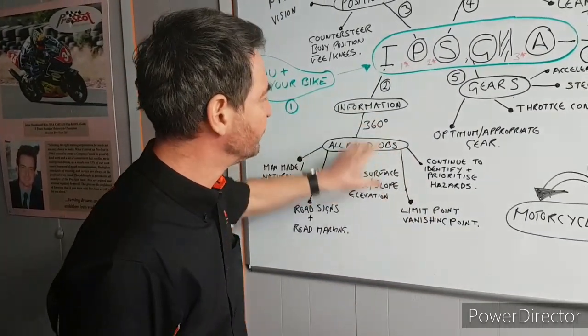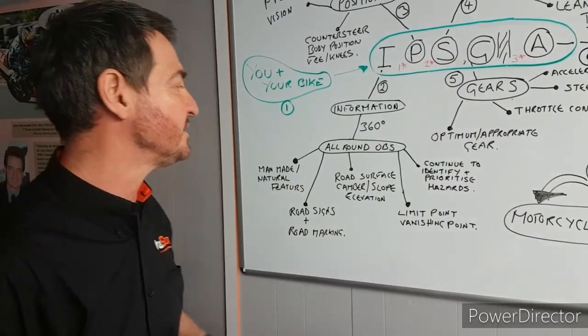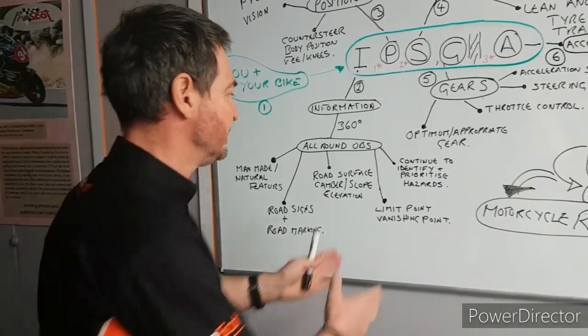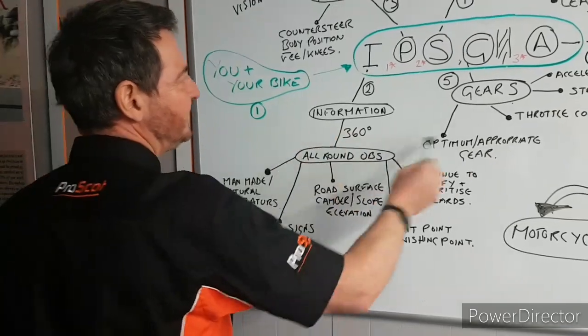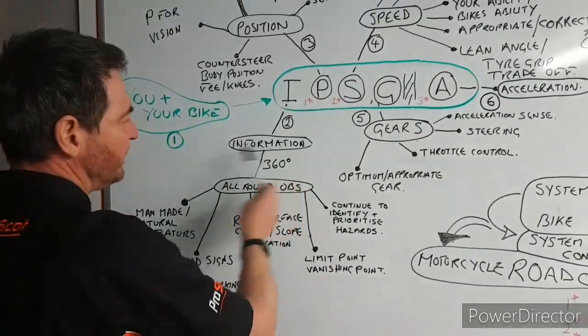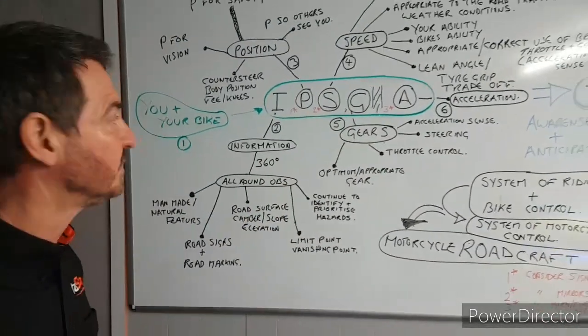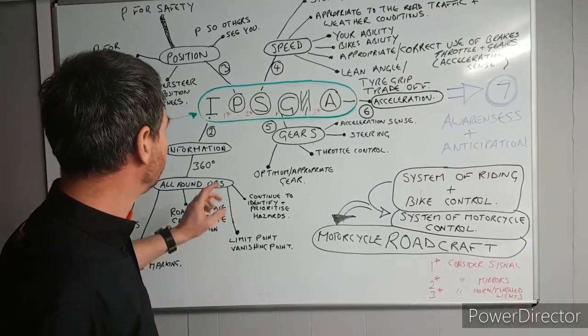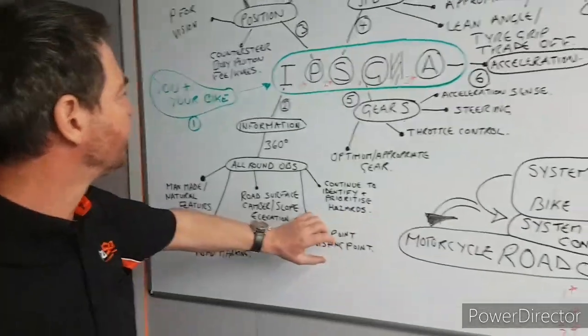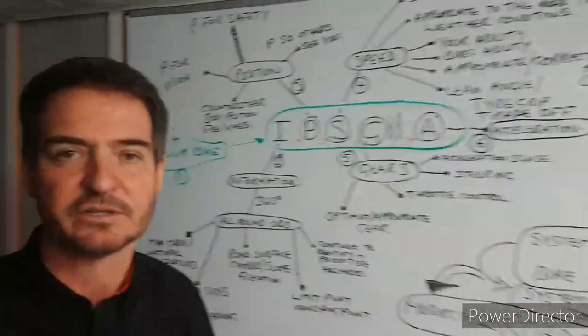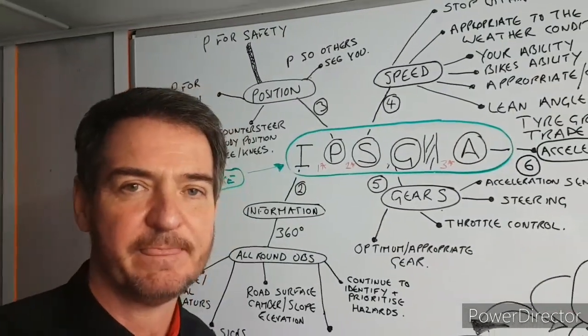And of course, you continue to look, you continue to identify further hazards, you continue to prioritise those hazards, and build down your riding plan. So when we talk about information, these are all the things that you're going to be gathering in that information phase. The next video we'll be looking at, we'll break this down in another video separately, but the next one we're going to look at is positioning next. That's our next video we'll talk about. Thank you.